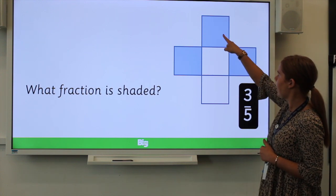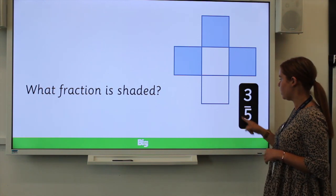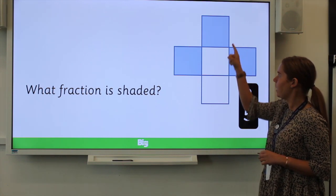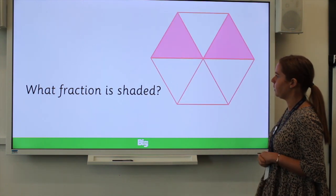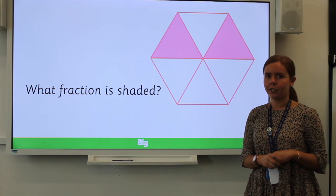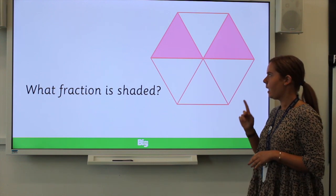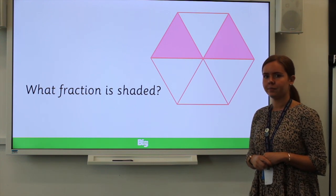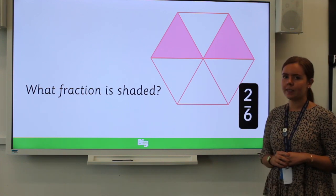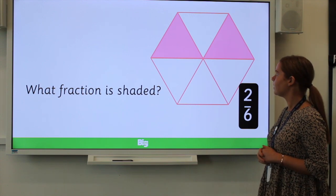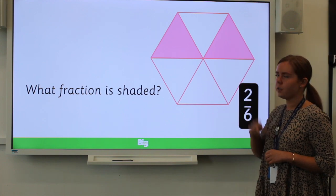As you can see, this shape has one, two, three, four, five equal parts, which is the denominator, and three of those parts are shaded, which is the numerator. Let's have another go — what fraction of this shape is shaded? You can pause and have a little think and write down your answer. If you said two-sixths, you would be correct, because there are six parts to the shape and two of those parts are shaded.